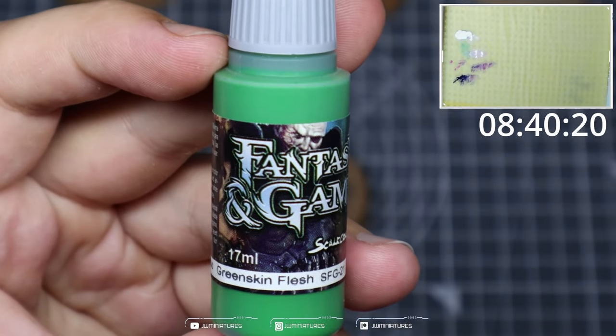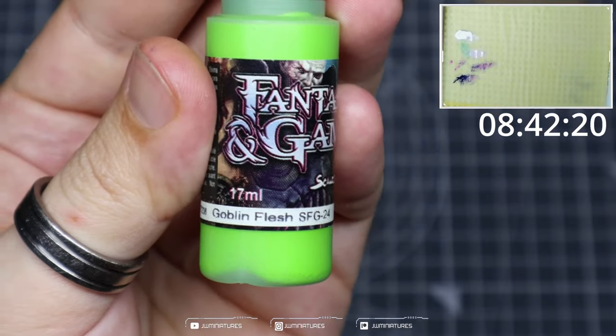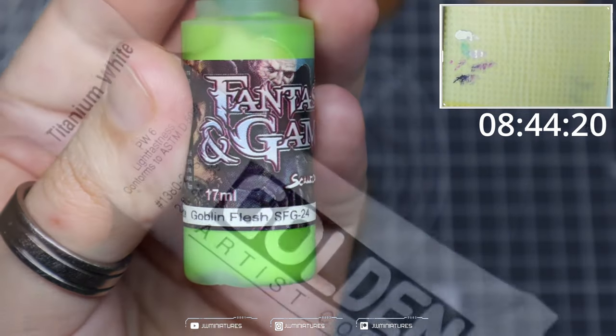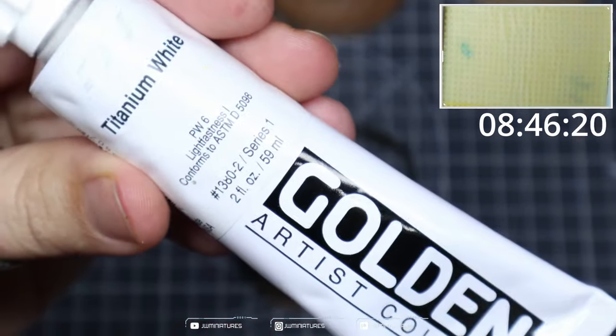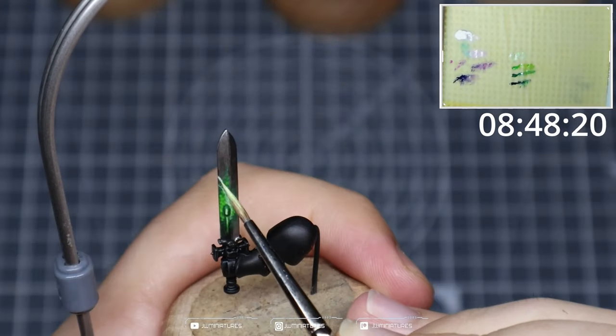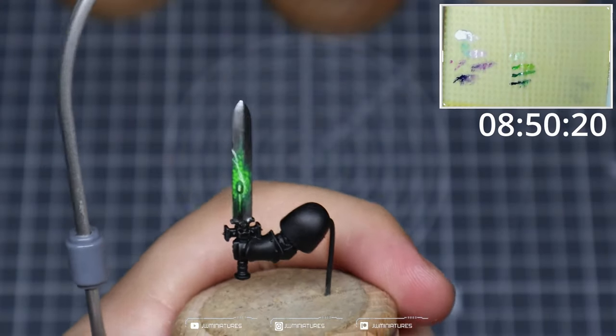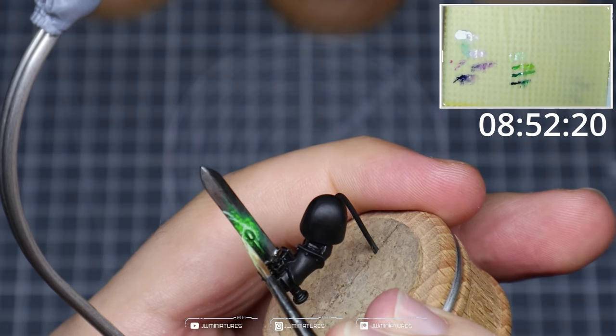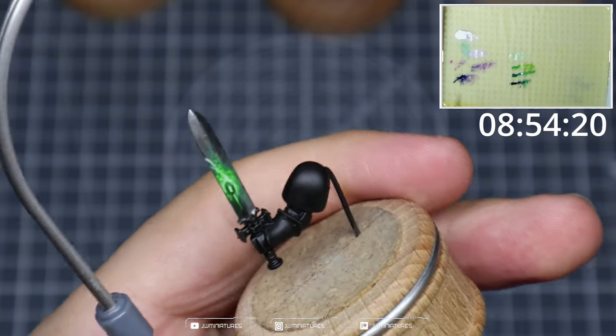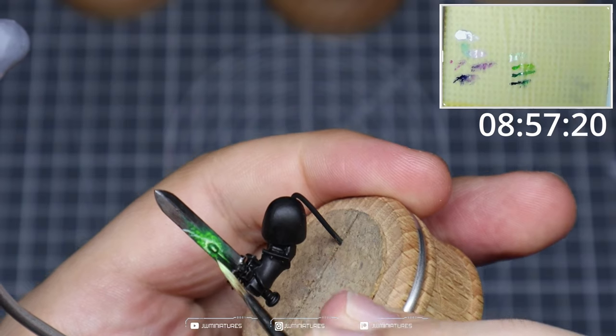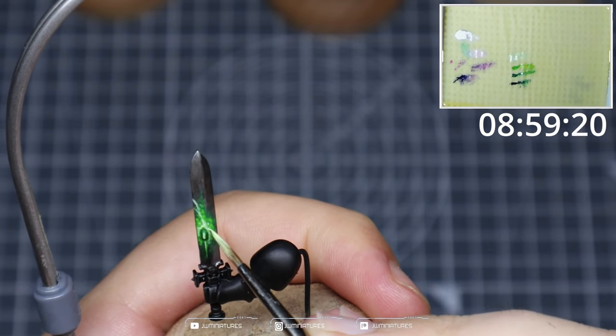Say you want to do it with green, grab yourself some Warp Lightning, Warpstone Glow, Moot Green and Titanium White once again. Obviously you can swap out these colors and I'll have them in the description below. But again, we're creating that gradient from the Warp Lightning up into the Moot Green.